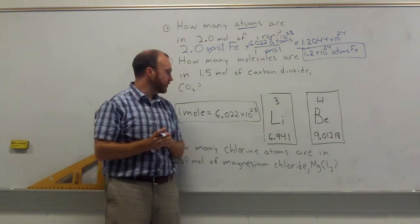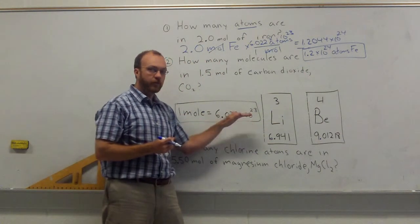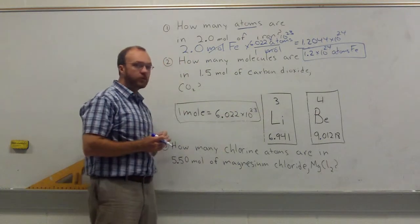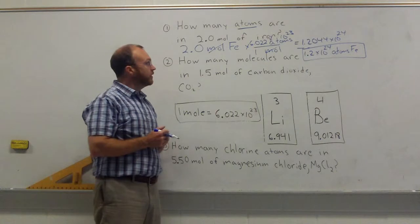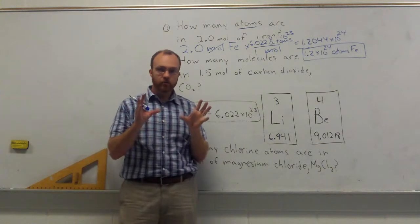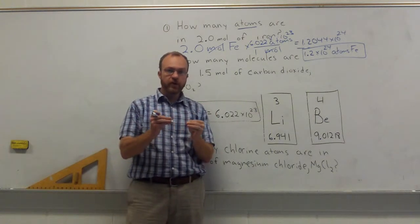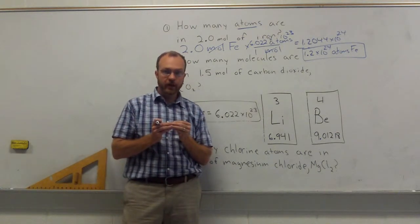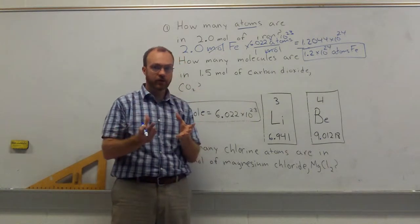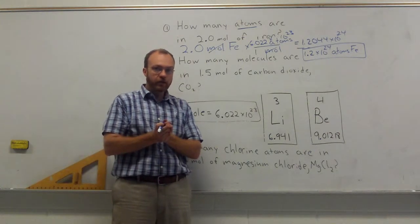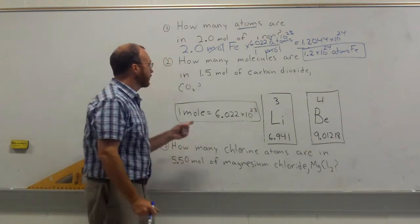It's a pretty simple process as long as you know that one mole is Avogadro's number — 6.022 times 10 to the 23rd. Let's look at another example that's just a little bit different. This time, instead of asking about atoms, the question is going to ask about molecules. A molecule is a group of atoms that are bonded together in a specific way. Molecules make up covalent compounds, which we sometimes call molecular compounds.